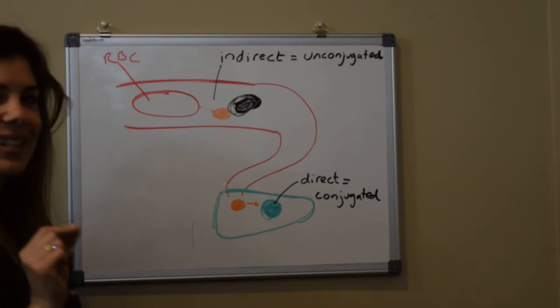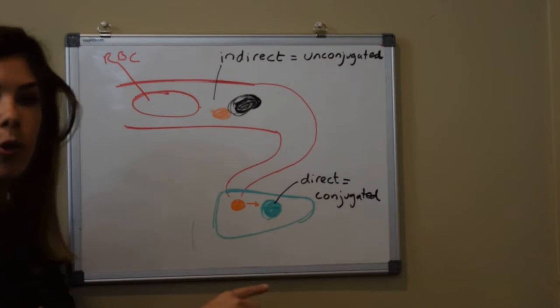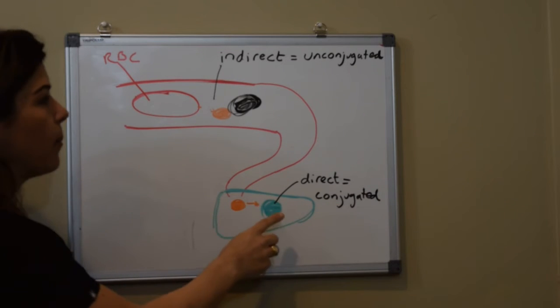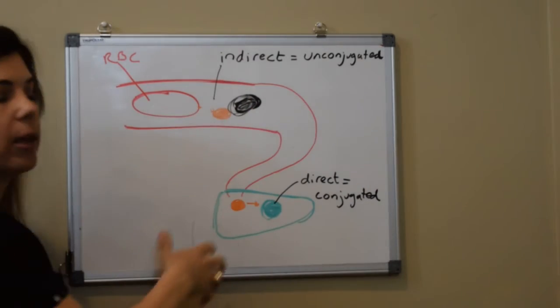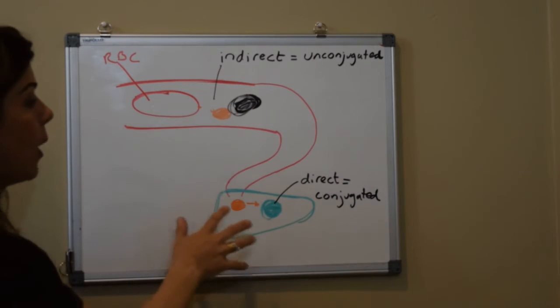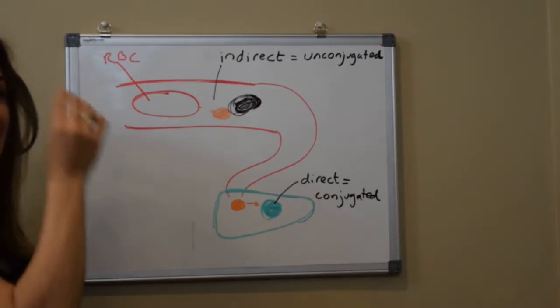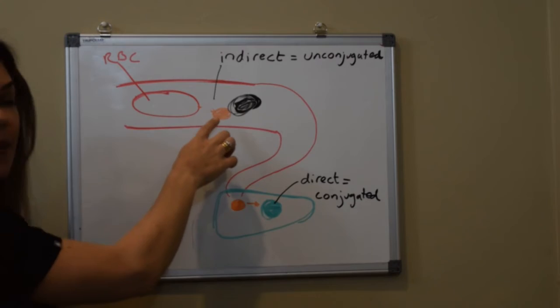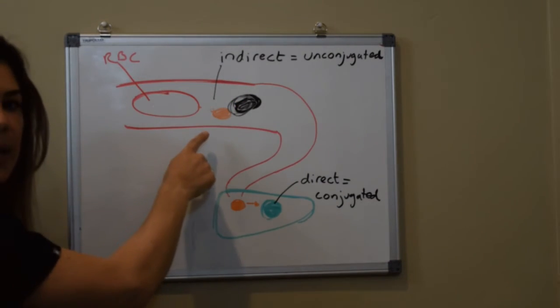I will make a slight aside here and that is that direct bilirubin is also one of the substances that's bound to albumin when it's traveling through the blood vessels. So if you do have a very high direct bilirubin then it will affect the indirect number slightly because it will be displacing some of that indirect bilirubin from the albumin.